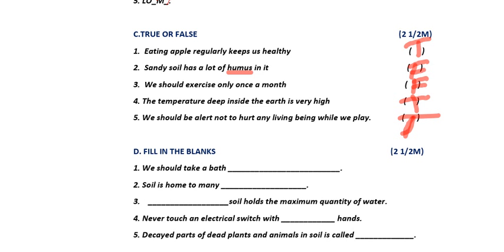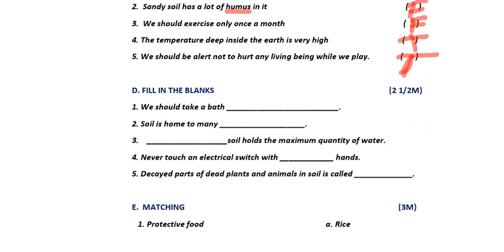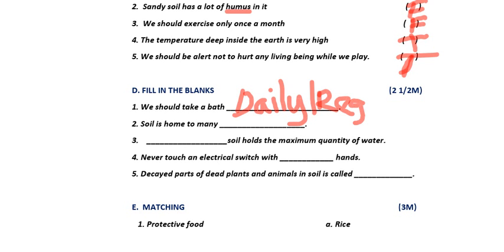Now moving to fill in the blanks. First: we should take a bath — blank. The answer is daily, or you can write regularly. Both are acceptable. Daily is spelled D-A-I-L-Y and regularly is spelled R-E-G-U-L-A-R-L-Y. Either word will get you marks.